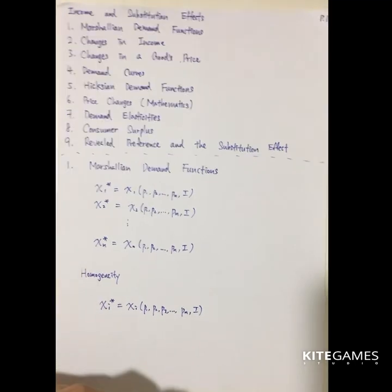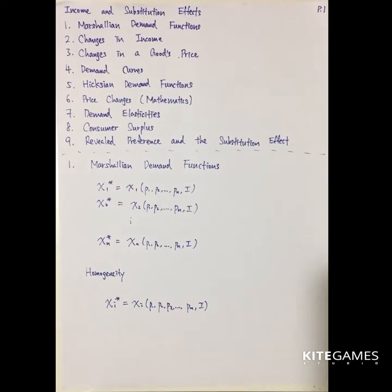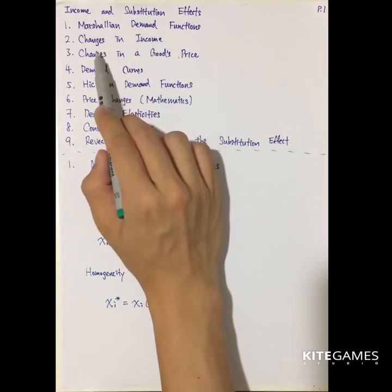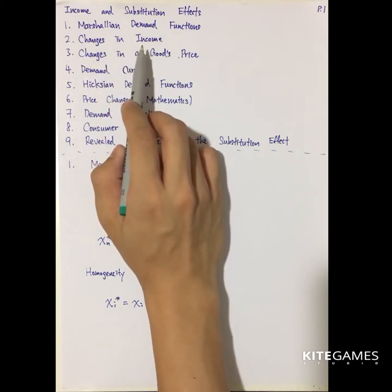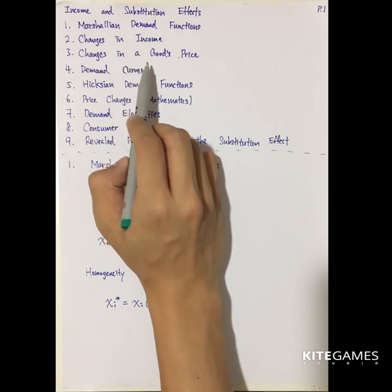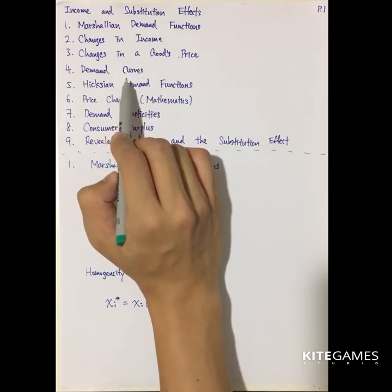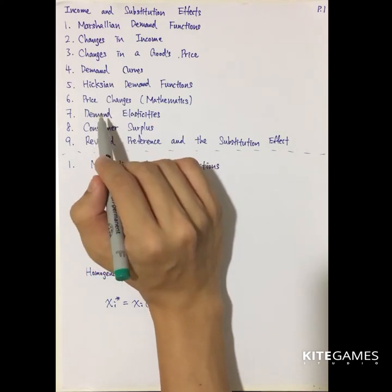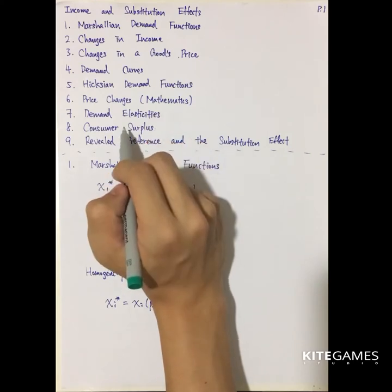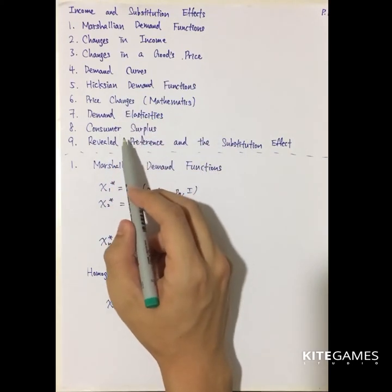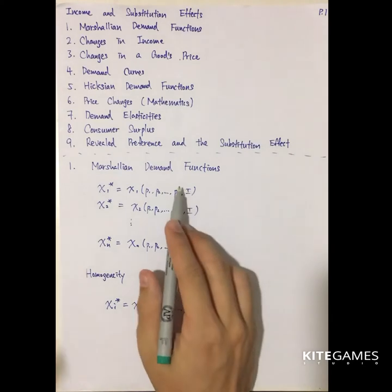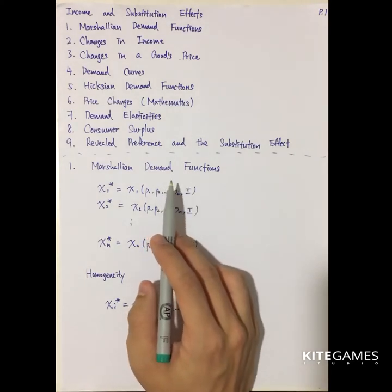This chapter will be a long chapter on the demand function of one good. First, we will look at the Marshallian demand function. Second, the effect of change in income. Third, the effect of change in price. Fourth, demand curves. Fifth, the Hicksian demand functions. Next, price changes from a mathematical perspective. Finally, demand elasticity, consumer surplus, and revealed preference — another axiom in economics developed by Paul Samuelson.